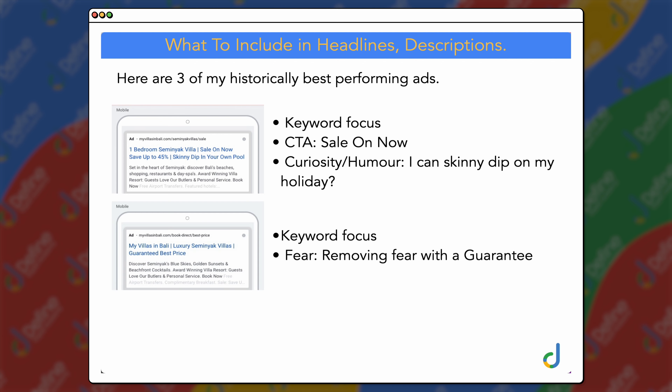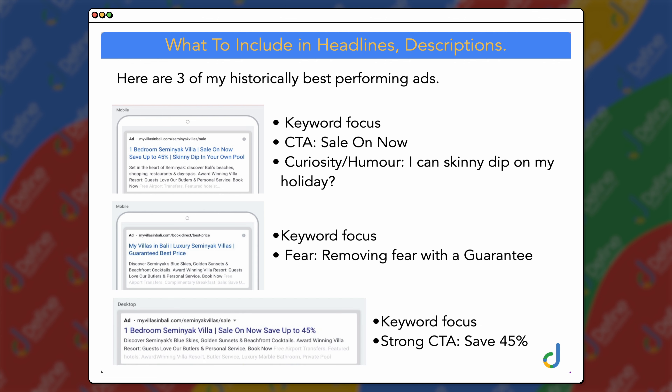Then there was another one — quite simple — keyword focus, and then removing the fear with a guarantee: 'Guaranteed Best Price.' And another one with keyword focus and a strong call to action saving 45%. Those last two built up emotion through either the fear of missing out or the enticement of a short sale where they could save up to 45%.